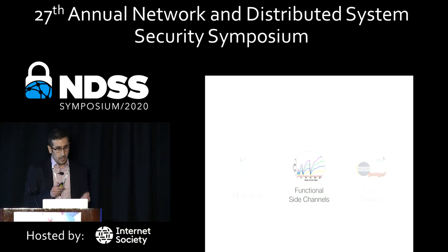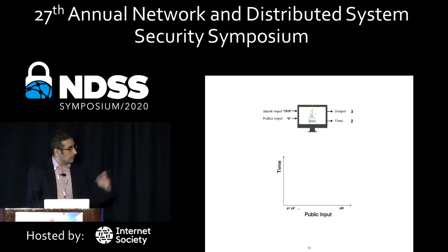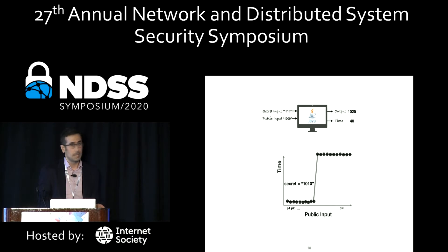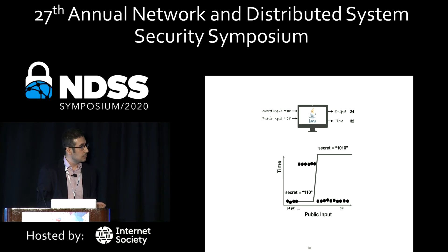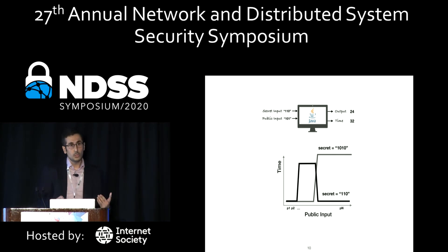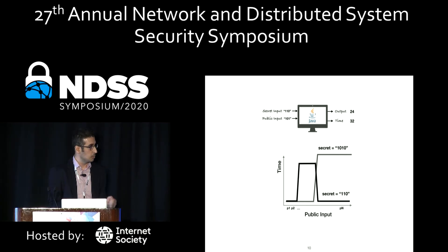The next aspect is functional side channels — this is a novel way to model side channels. We say that for a secret like 1010, we observe the response time on multiple public inputs and build a function to represent that. Similarly, for another secret 110, we do the same thing. This is important from both an attacking point of view and a debugging point of view.